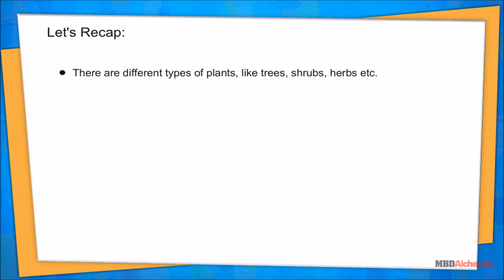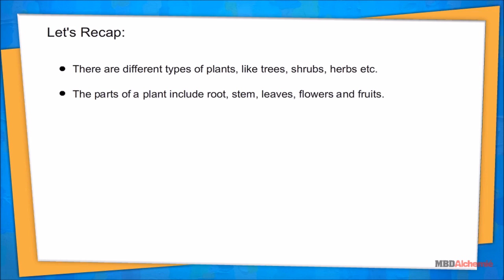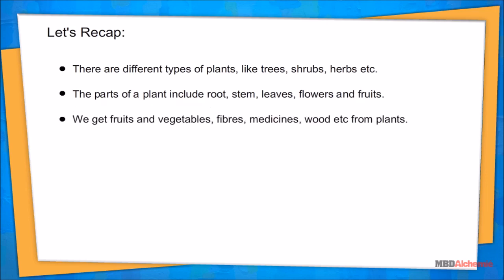Let's recap: There are different types of plants like trees, shrubs, herbs, etc. The parts of a plant include root, stem, leaves, flowers, and fruits. We get fruits and vegetables, fibers, medicines, wood, and more from plants.